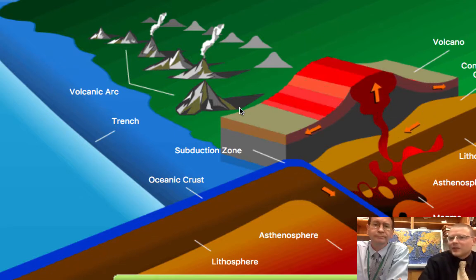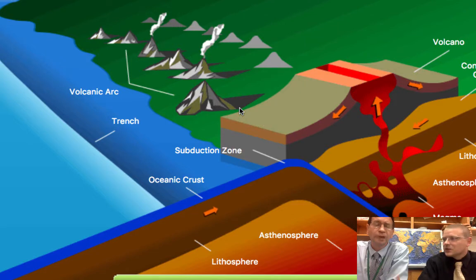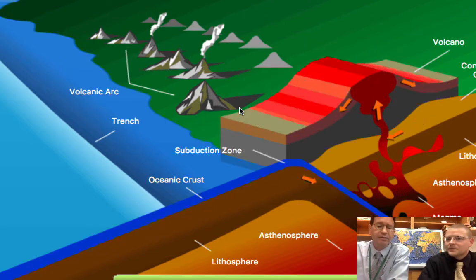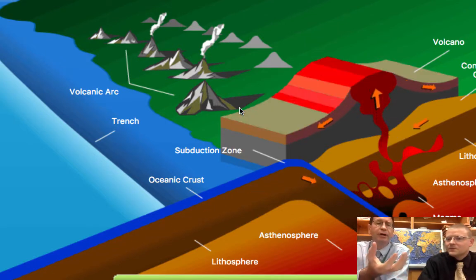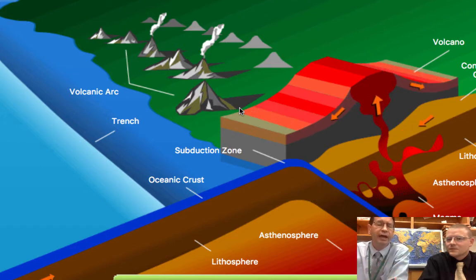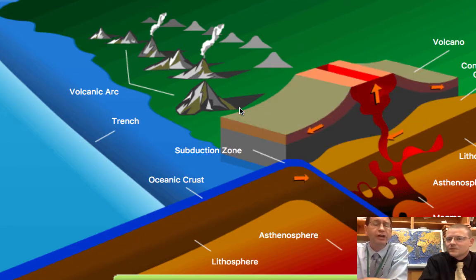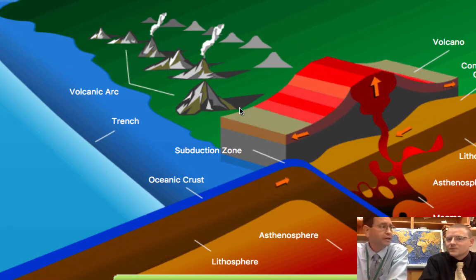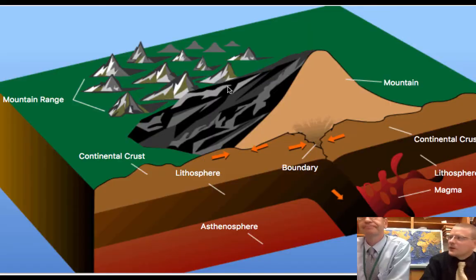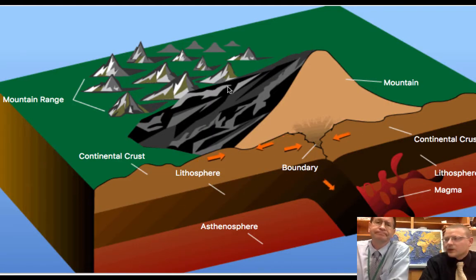And you can get things like mountain ranges or volcanoes to form. Since heat rises, as it rises to the top, it carries all that magma up with it and creates a lot of different kinds of features — a lot of volcanoes at this particular kind of boundary. But if it's not an ocean plate and a continent plate meeting...